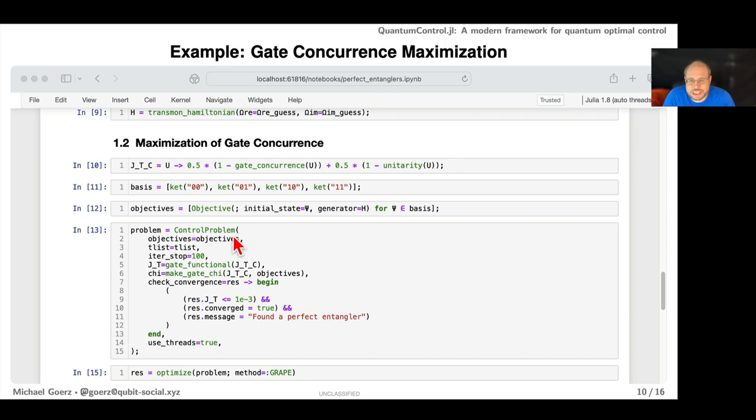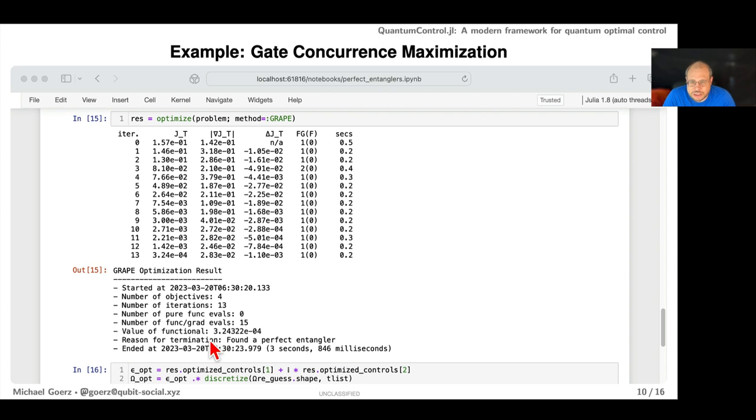To put it all together you define this optimization problem with the objectives, give it a time grid, tell it how many iterations it should do at most, and this is the functional you have to convert into the right format. This is make_gate_chi—that's the calculation of the gradient done automatically with semi-automatic differentiation. Then you have a convergence check and tell it that it should propagate all the different basis states in parallel. About four seconds later you get a solution in 13 iterations. That's all there is to doing this kind of optimization.